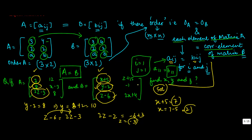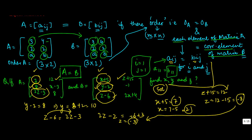We can verify using another equation: Z plus 15 equals 12 gives Z equals 12 minus 15, which is minus 3 — the same value. So you may use one equation or the other and the value will be the same. Try to verify this for the remaining equations yourself.